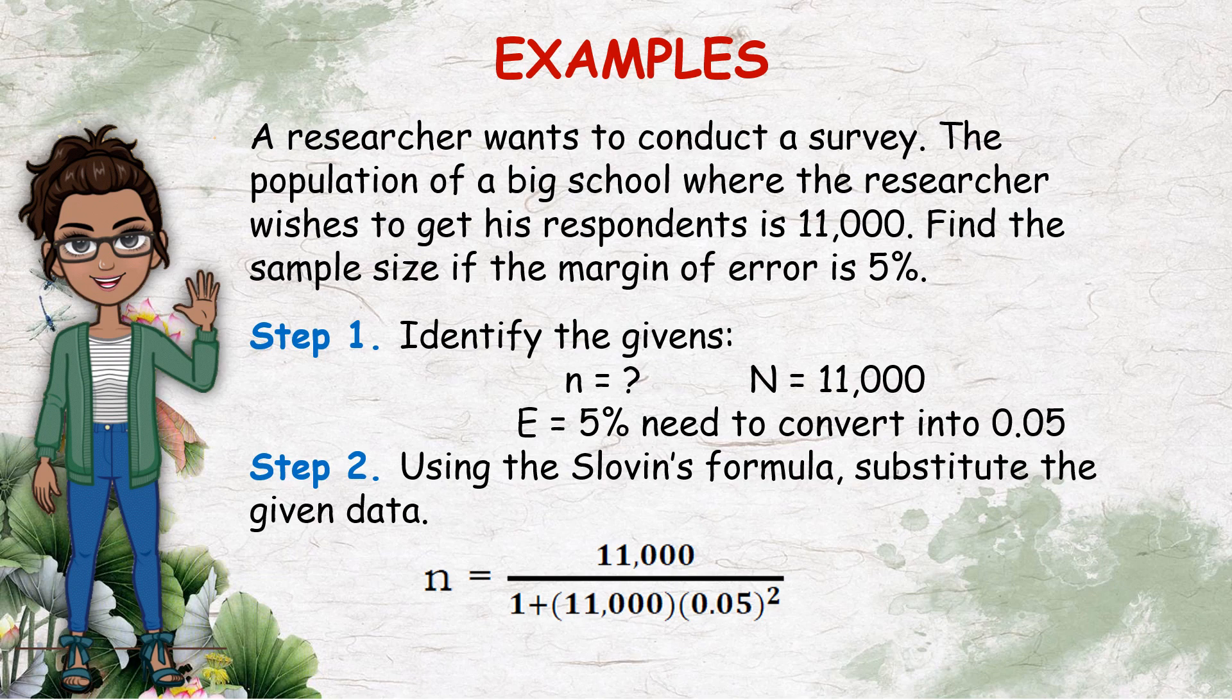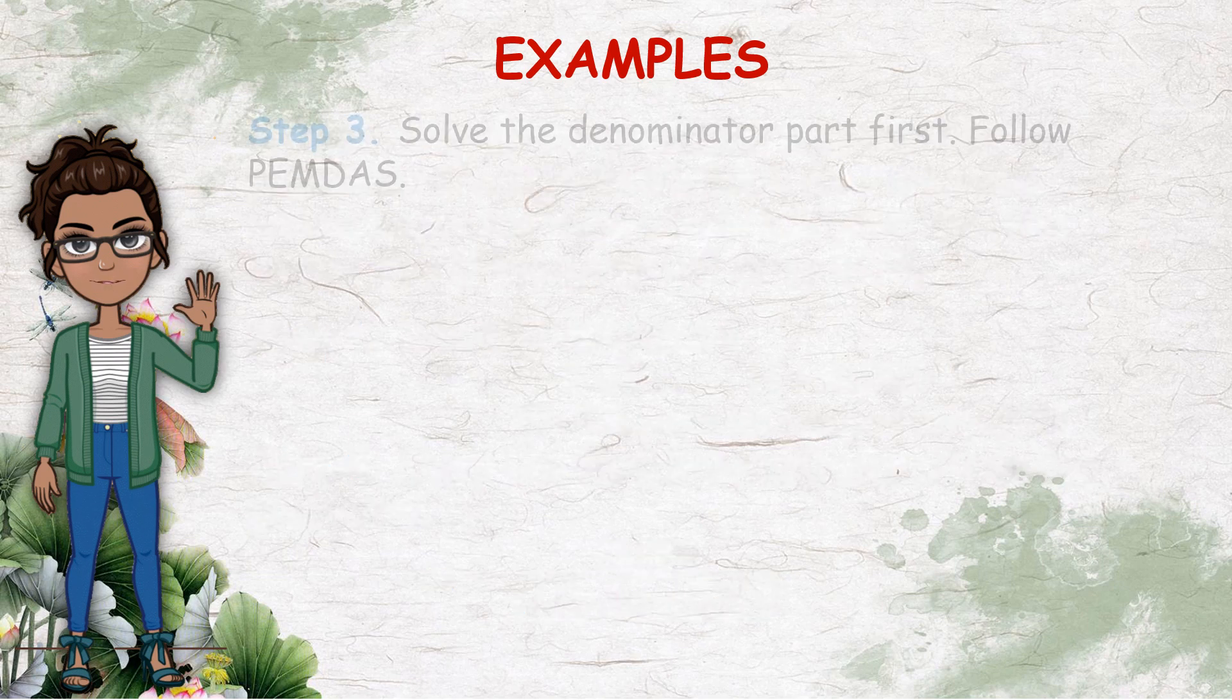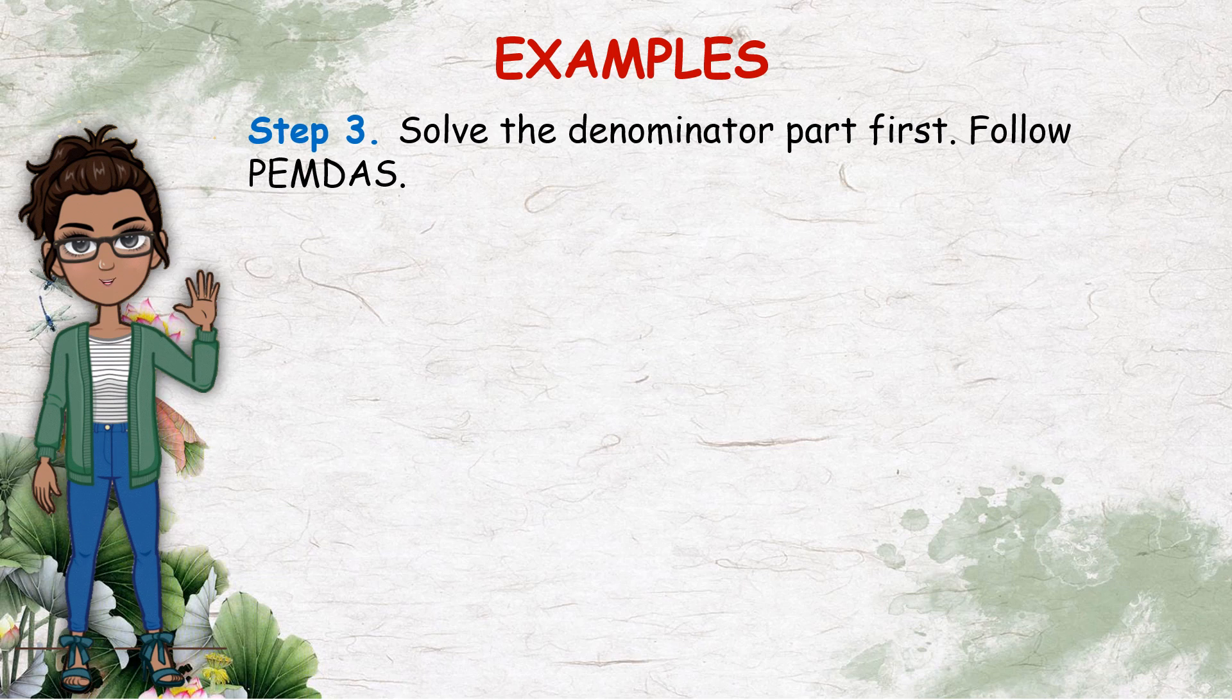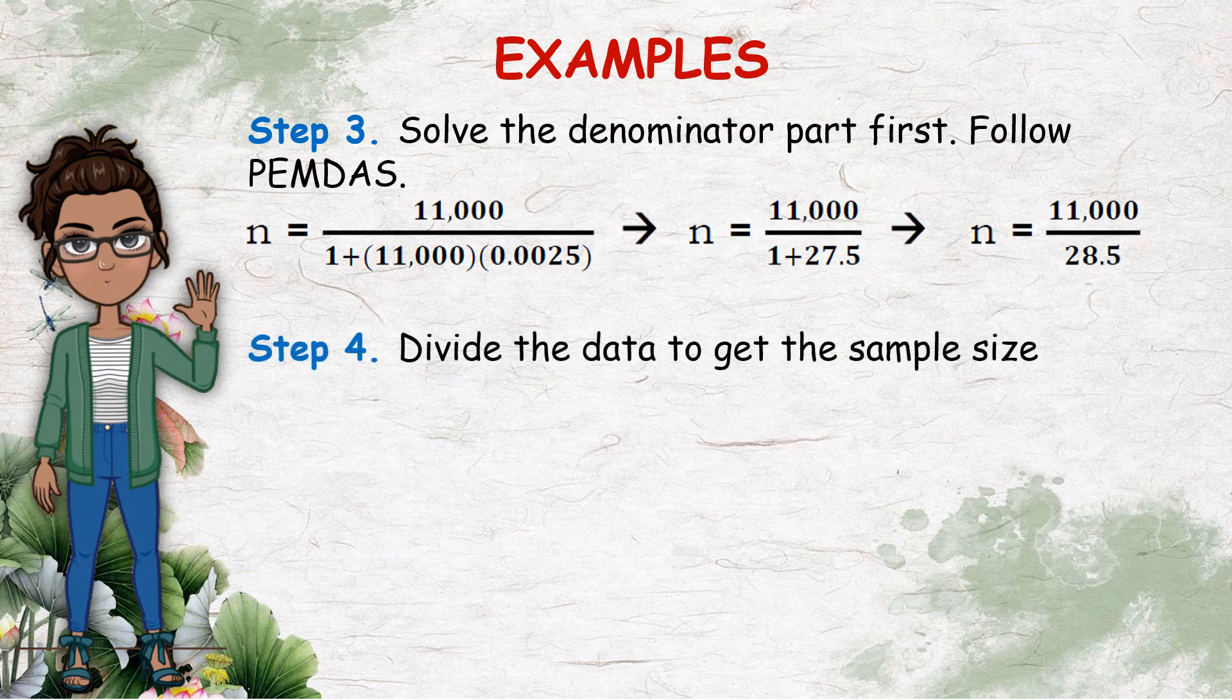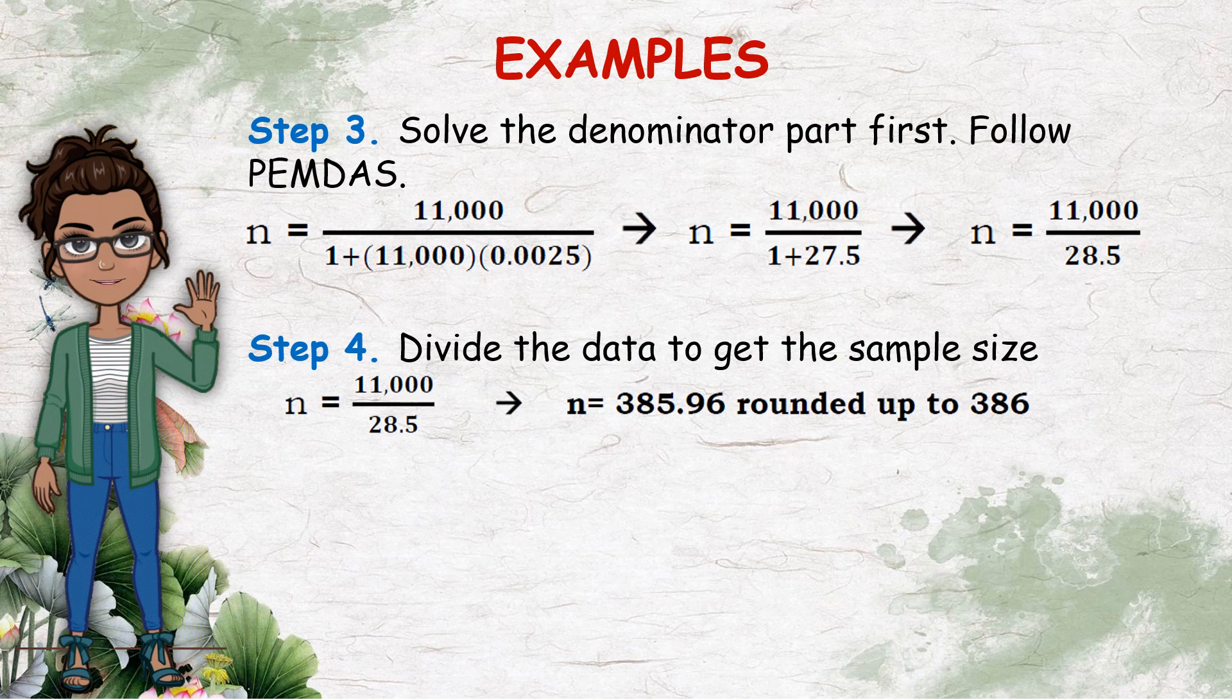And then, step 3 is to solve the denominator part first, then follow PEMDAS. Meaning, n equals 11,000 divided by 1 plus 11,000 times 0.0025. N equals 11,000 divided by 1 plus 27.5. Then n equals 11,000 divided by 28.5. Then step 4 is to divide the data to get the sample size. N equals 11,000 divided by 28.5, and will yield 385.96, rounded up to 386.